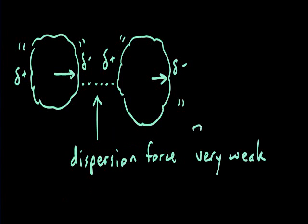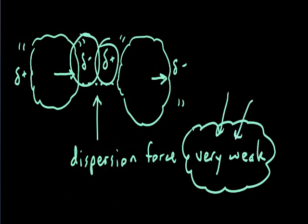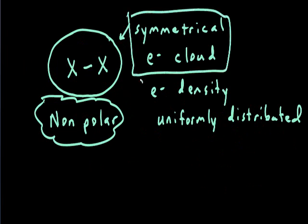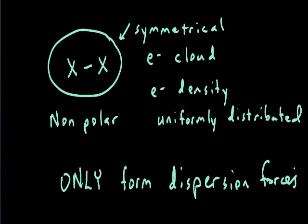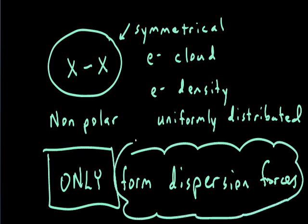This temporary shifting of the electron cloud creates temporary negative and positive charges that have a slight attraction between one another — a fairly weak attractive force. In molecules that are nonpolar, where they have a symmetrical electron cloud with uniformly distributed electron density, the only type of attractive force they can create is dispersion forces.